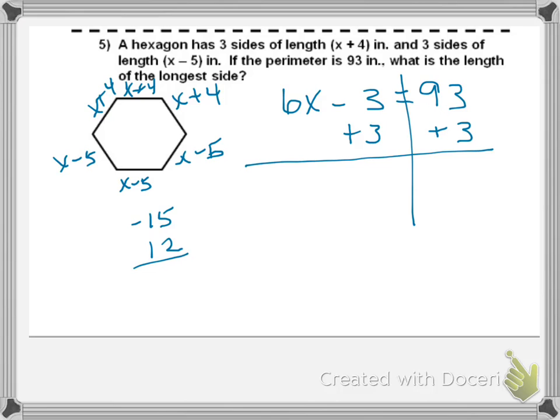Then I put my brick wall up. Add 3 to both sides. 6X equals 96. Divide both sides by 6. And X equals 16.